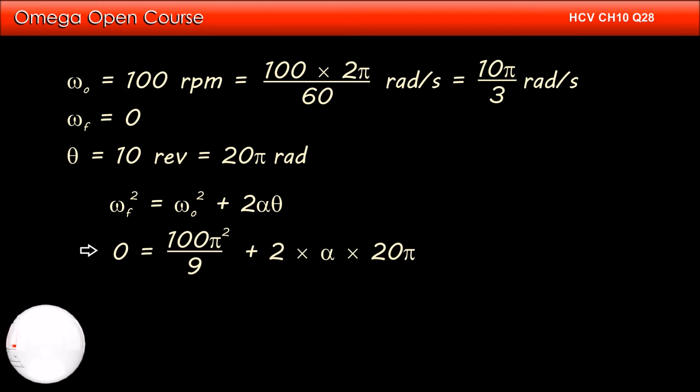Putting the values, we get 0 equals 100π² divided by 9 plus 2 times α times 20π. This implies α equals minus 5π/18 radians per second squared.